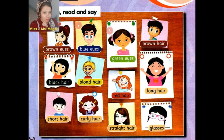Number four: Brown hair. Again, brown hair. What is the meaning of brown hair? يعني شعر بني — brown hair. Repeat after me: brown hair. Excellent! Number five: Black hair. What is the meaning of black hair? Same as brown hair — يعني شعر أسود. Again, black hair.